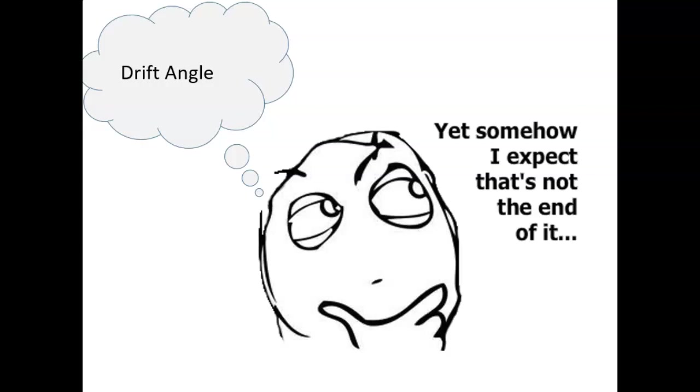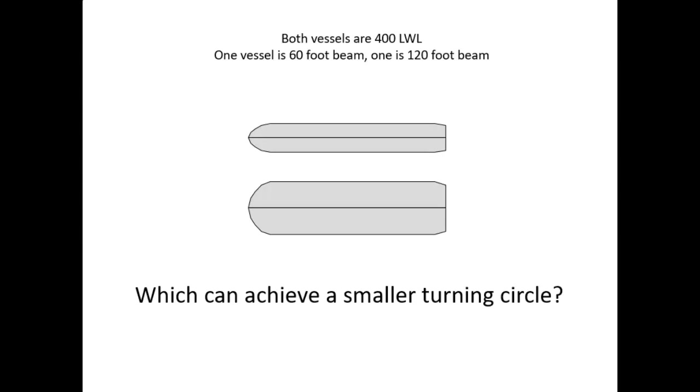So I got a question for you. You've got two vessels. They're both 400 feet length of the water line. One vessel has a 60 foot beam and the other one is double that. It's a 120 foot beam. And I'm going to ask you this question and give me an honest answer. What was your initial response to that question? The smaller one is going to have a smaller turning circle or the beamier one is going to have a smaller turning circle.